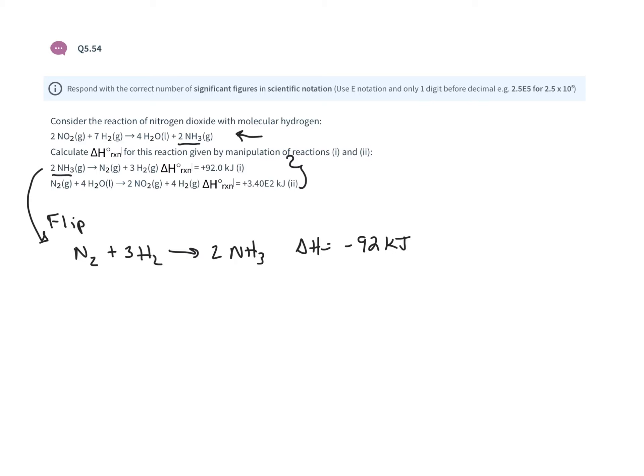For the second reaction, we have nitrogen and water. Looking at the desired reaction, water should be a product, so we flip this reaction as well: 2NO₂ + 4H₂ → N₂ + 4H₂O. Because we flip the reaction, we flip the ΔH, which becomes -340 kilojoules.